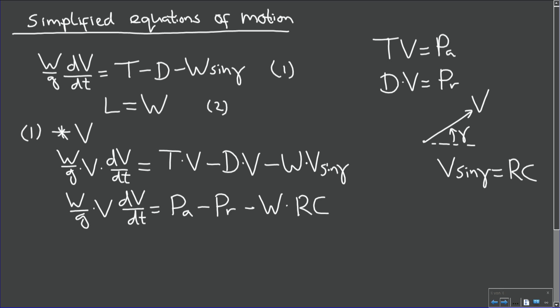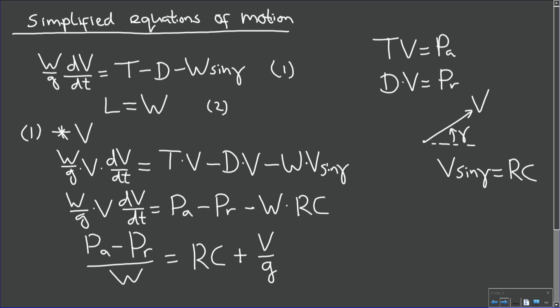You can see that thrust times velocity equals power available, drag times velocity is the power required to overcome aerodynamic drag, and V times the sine of the flight path angle equals the rate of climb. Inserting that into the equation and rearranging, I get: power available minus power required equals weight times the rate of climb plus the acceleration term. Dividing by aircraft weight, this is our result — called the power equation.